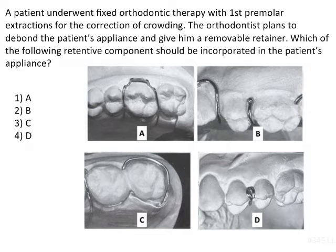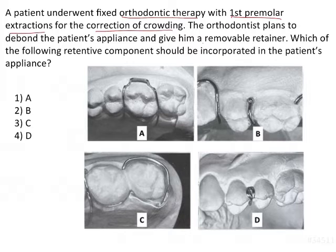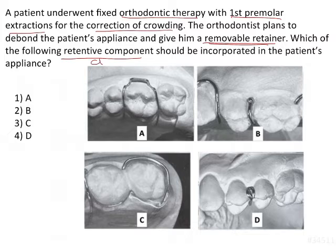In this case, a patient underwent orthodontic therapy for the correction of crowding, and his first premolars were extracted. Now that treatment is complete, the orthodontist wants to give him a removable retainer, because after orthodontic treatment there is still a tendency for relapse. To prevent relapse, a removable retainer is being given. The question asks which retentive component or clasp should NOT be incorporated in the patient's appliance.